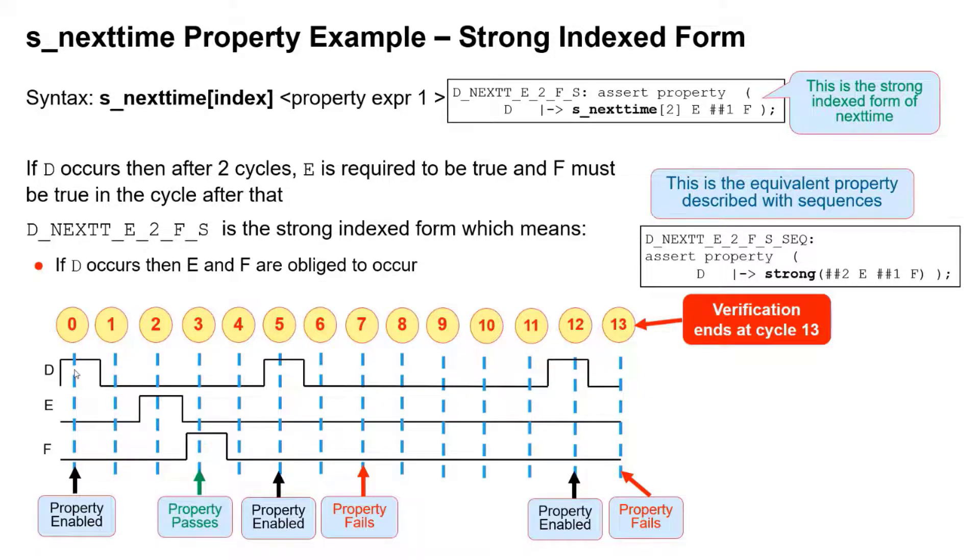So we've got the same kind of properties as before. If d occurs here, two cycles later we get e, we must have an f the following cycle. Property enabled here, after two cycles we don't get e, therefore that property fails. But the difference is here.